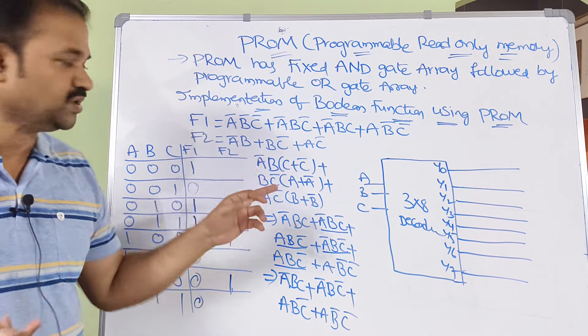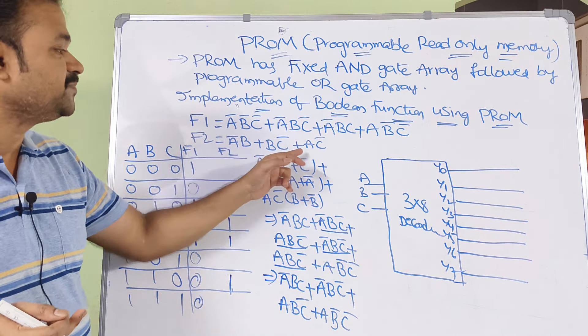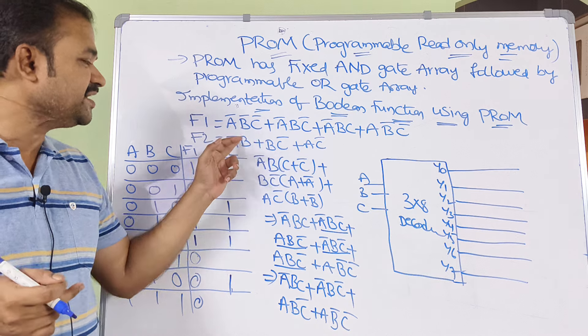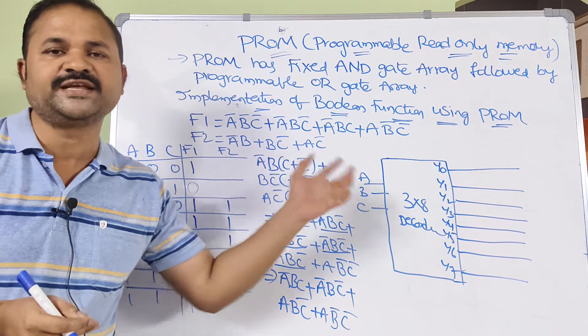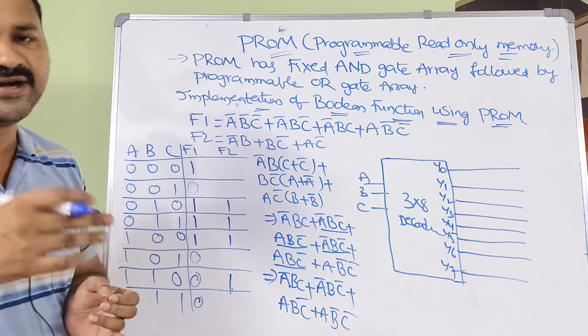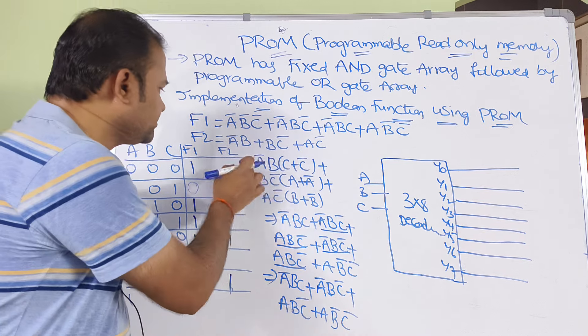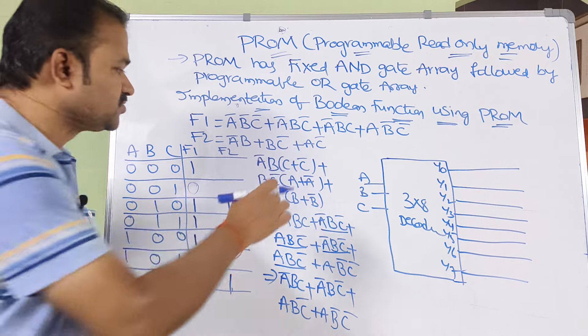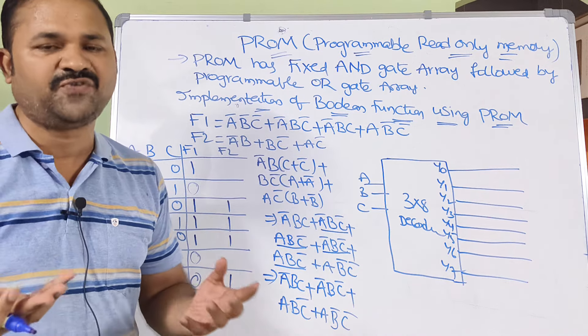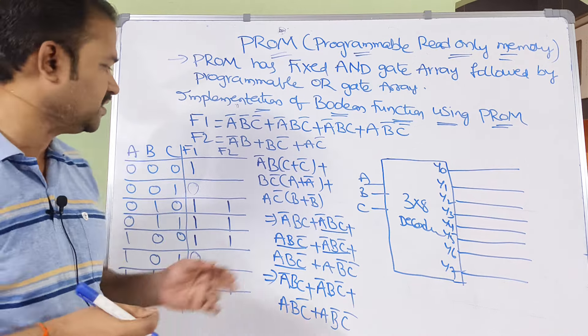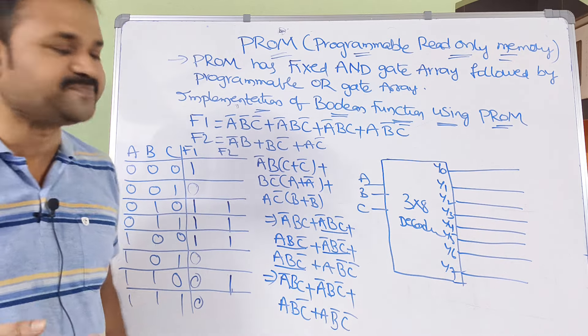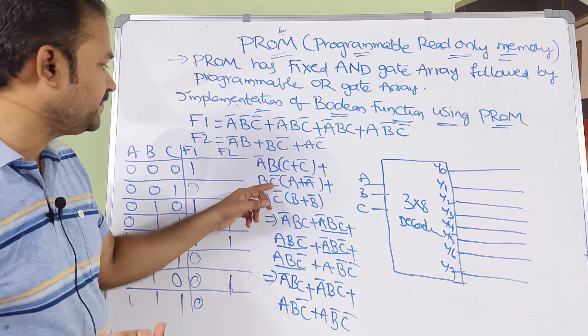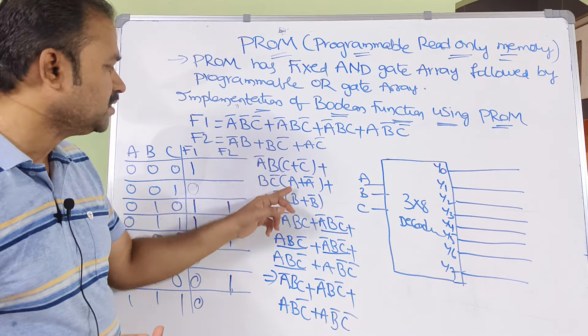Now let us see about F2, which is: A bar B + B C bar + A C bar. In every term one variable is missing, so it is not in standard form. In order to obtain the standard form: A bar B is multiplied by (C + C bar); the second term B C bar is missing A, so multiply by (A + A bar); the third term A C bar is missing B, so multiply by (B + B bar).